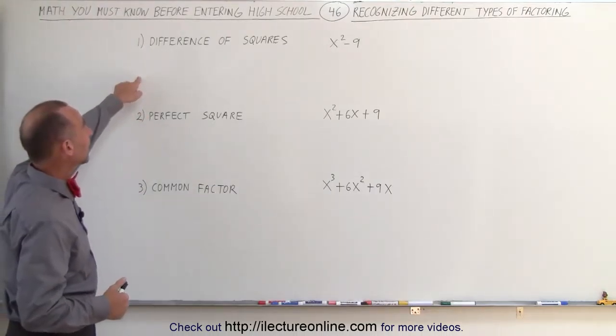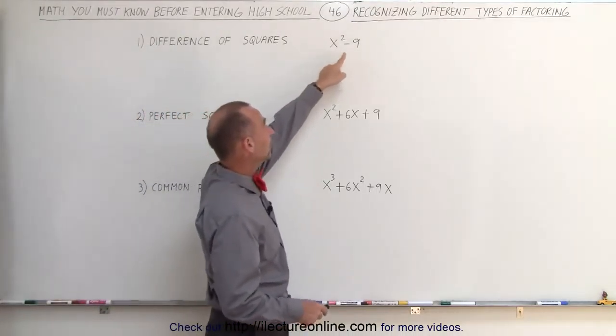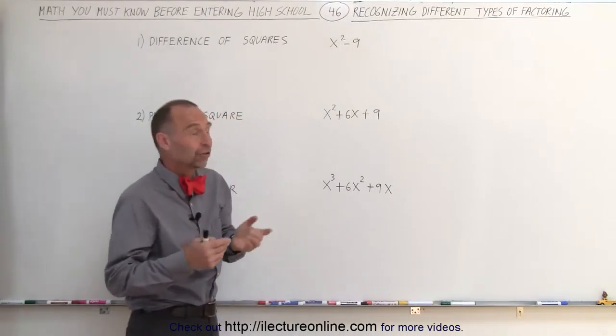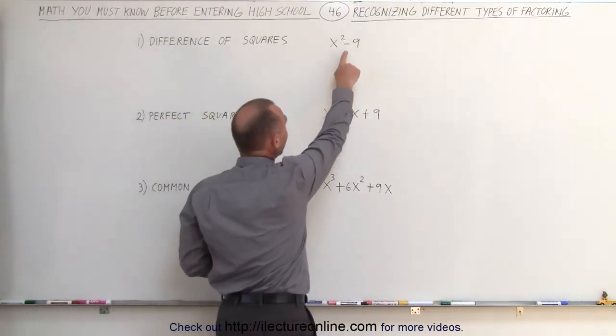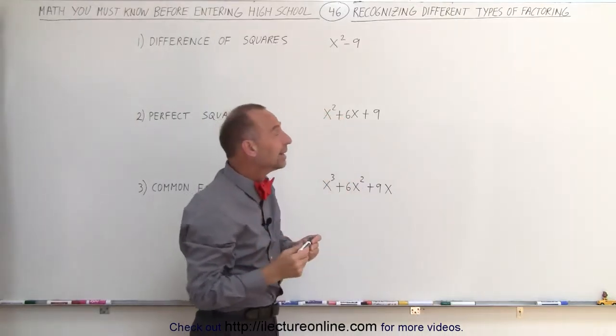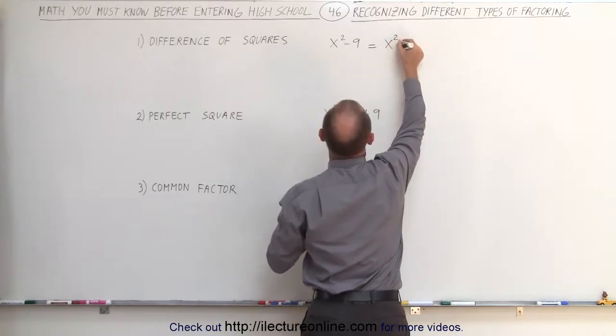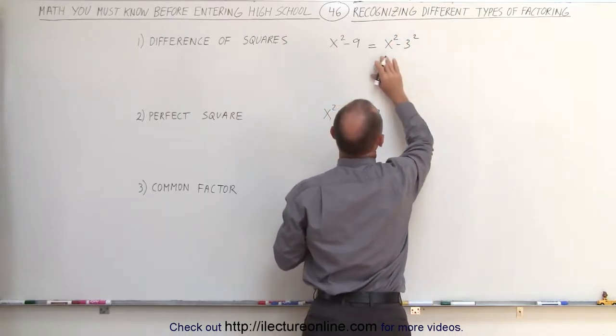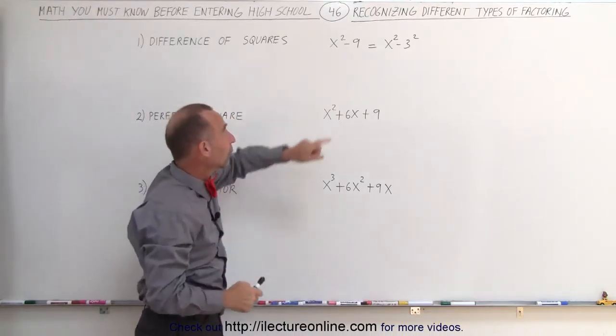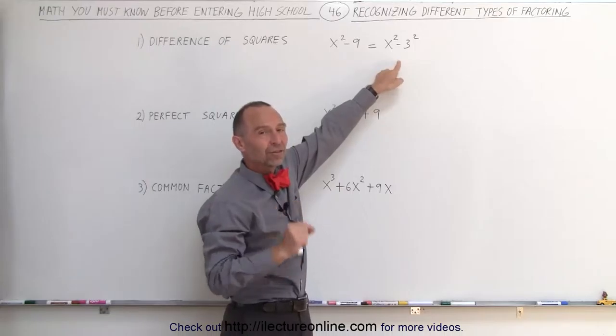The first one is what we call the difference of squares. Now here we have only two terms, x squared minus 9, and at first it may not be apparent that is indeed the difference of squares. It is the difference of something, the difference of x squared and 9, but you can rewrite the 9 as 3 squared, so we can write this binomial as x squared minus 3 squared. Now we have written the difference of squares.